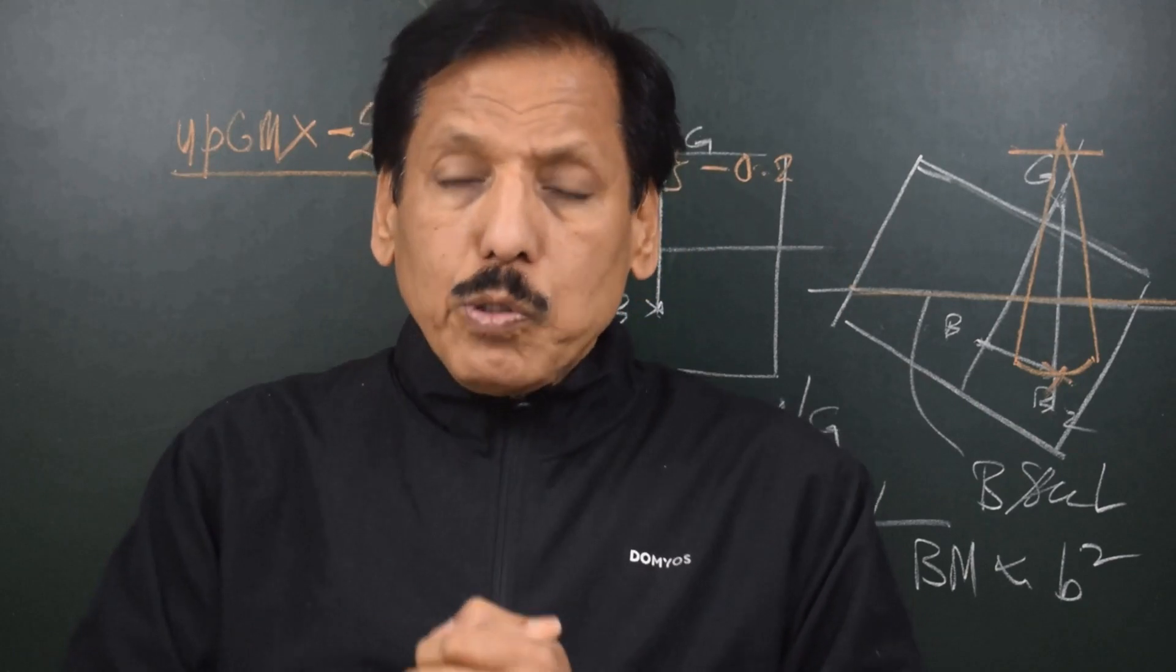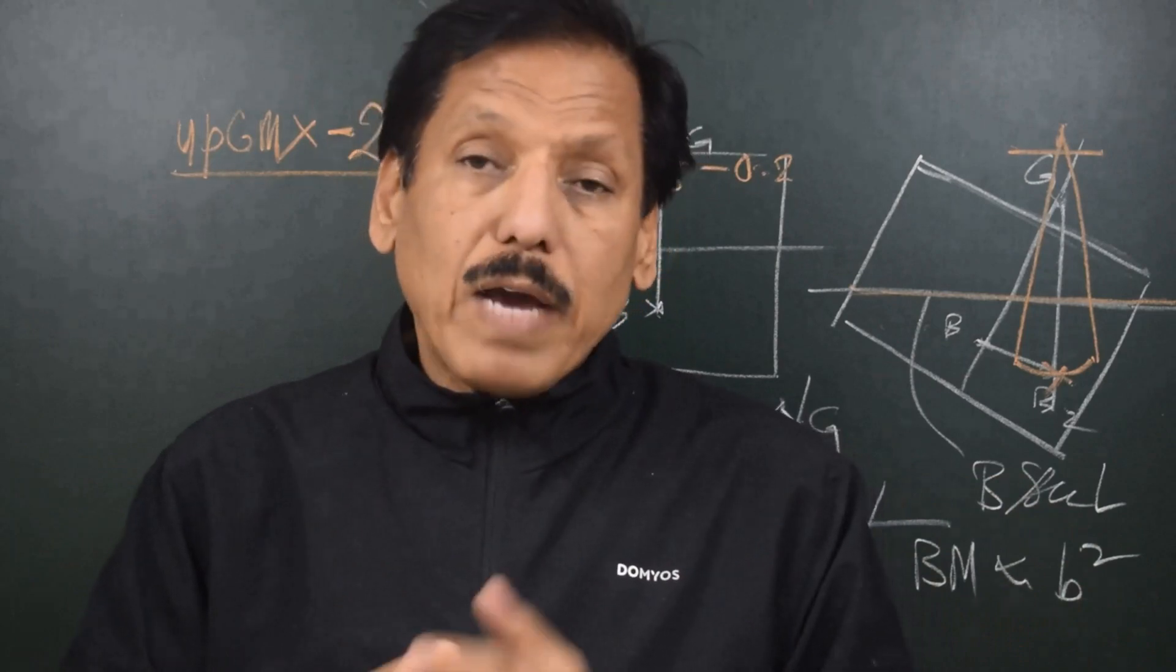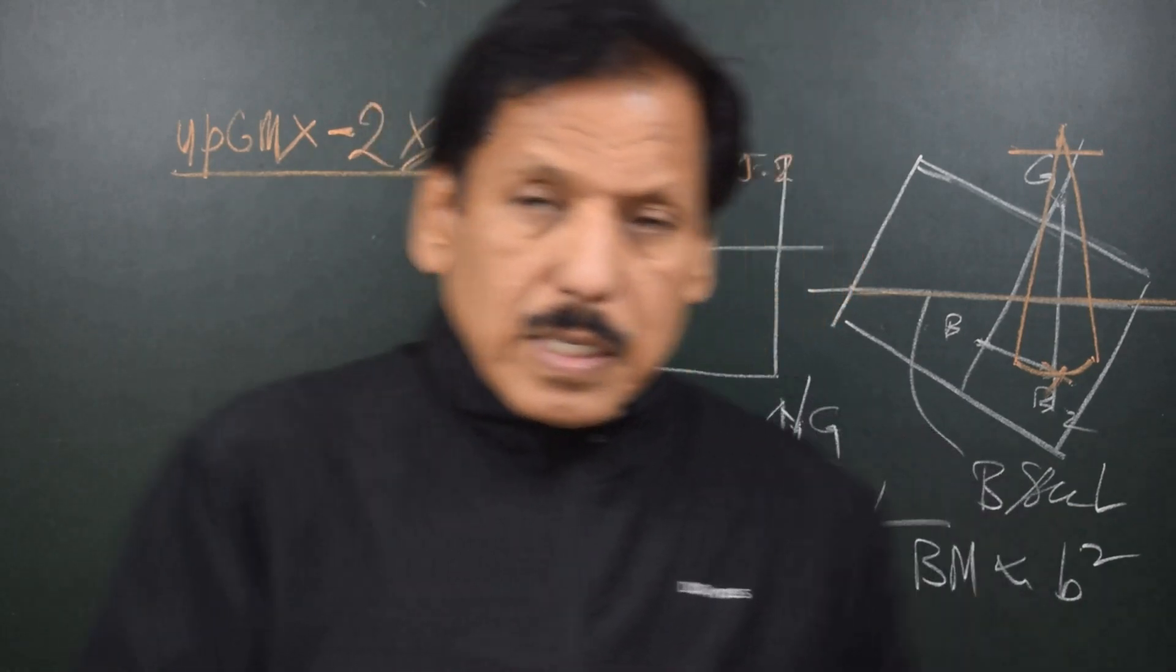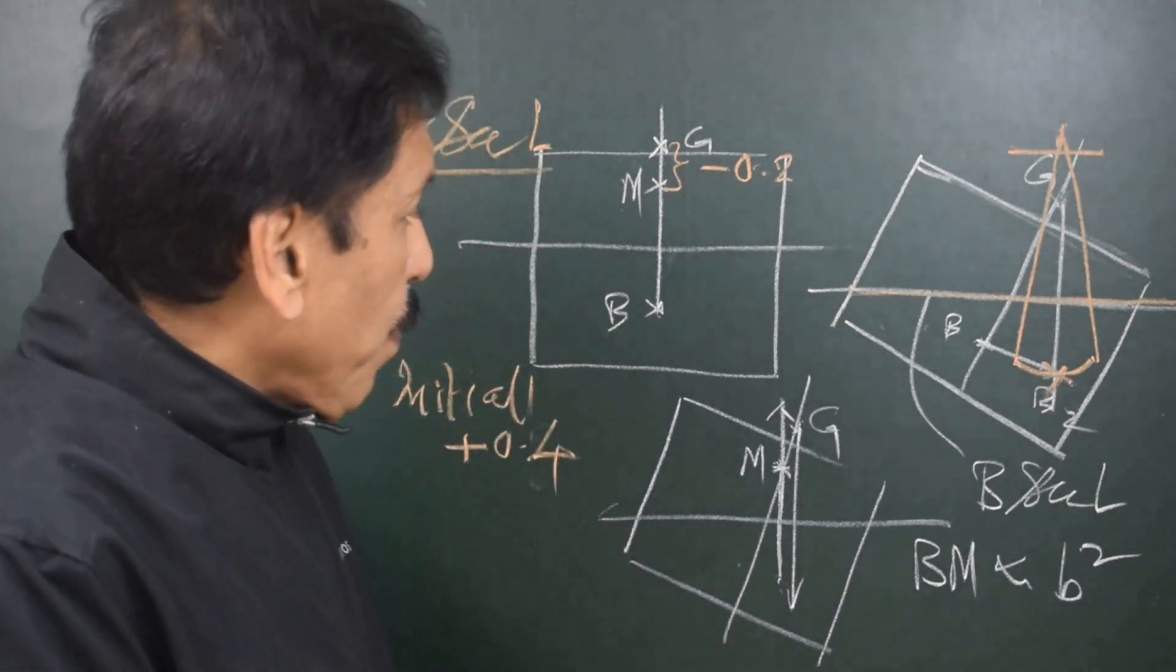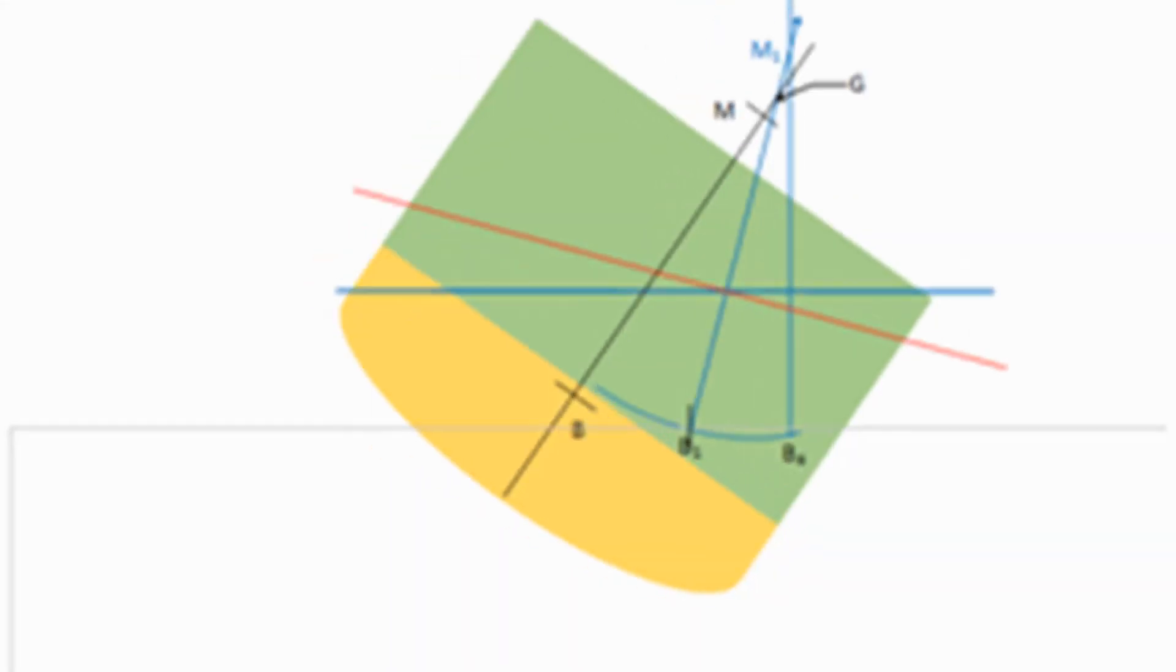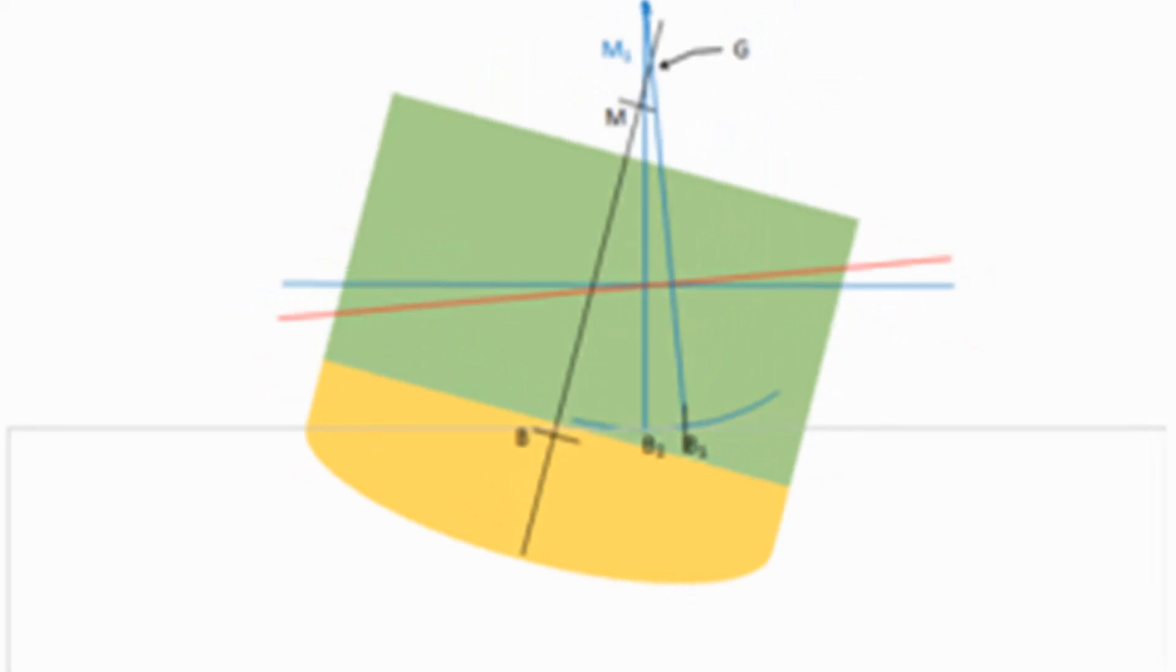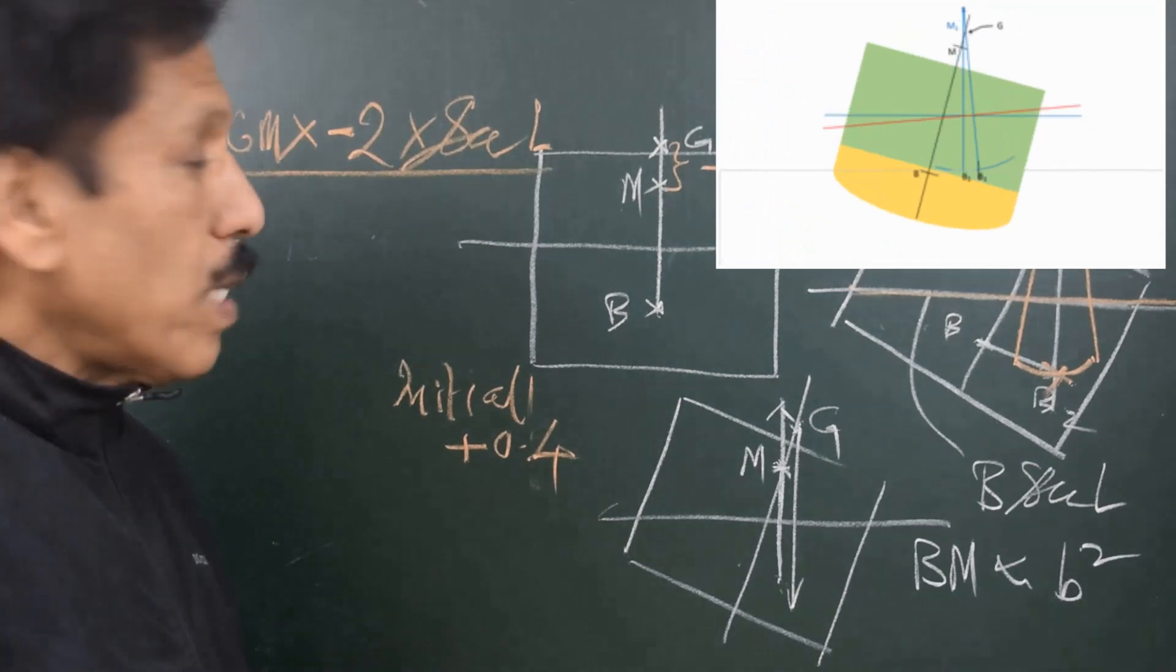In angle of loll you don't have unequal weights on port and starboard side. You have excessive free surface or the ship is top heavy. This is the basic description of a ship that comes to angle of loll. When the ship comes to angle of loll we find that the ship is able to oscillate about angle of loll, which indicates that the ship has got a positive GM at angle of loll. And as I told you, the positive GM is equal to upright negative GM multiplied by minus 2 into secant of latitude.